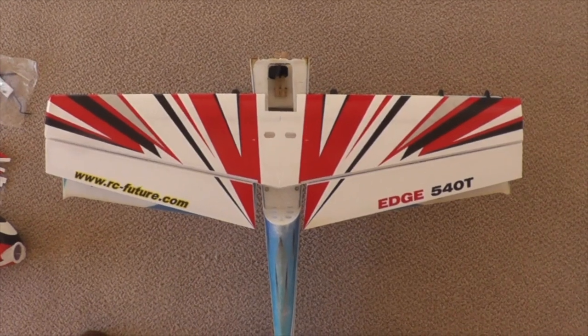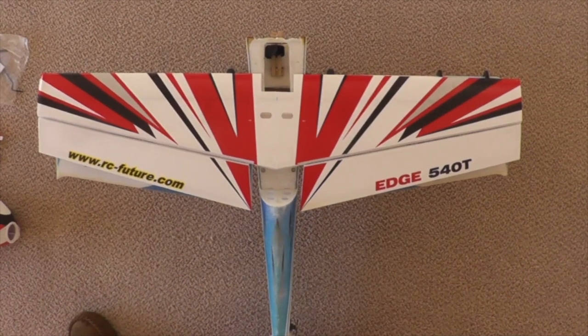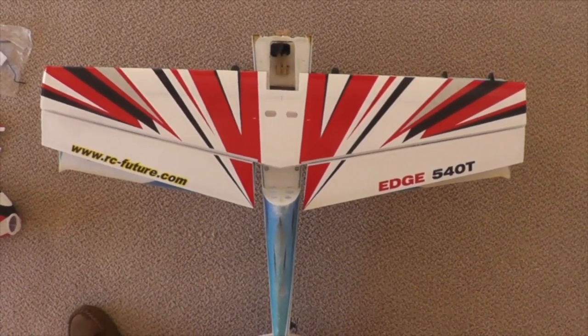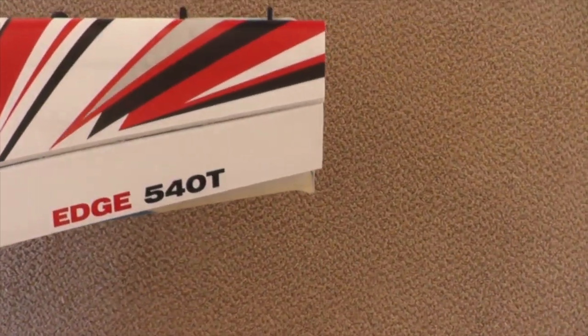Here's the Future Model wing compared to the Sky Wing Edge, and you can see that the shape is actually a little different. Wingspan is about an inch greater on the Future Model, but it's also more tapered on the end.